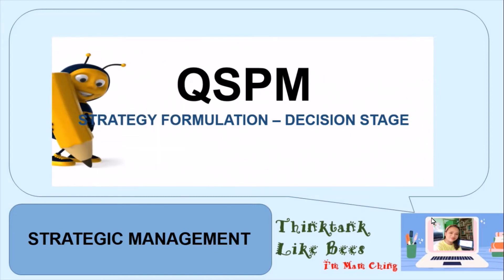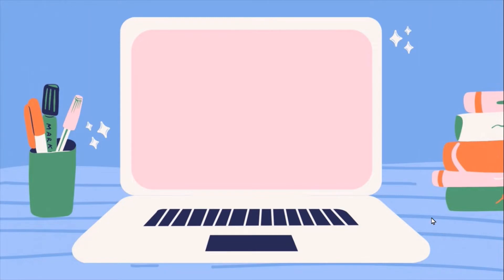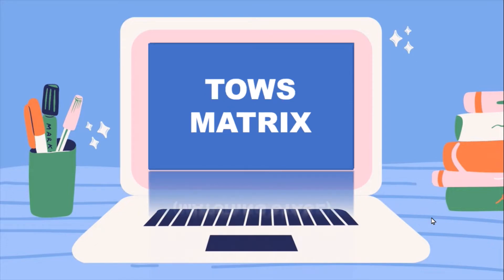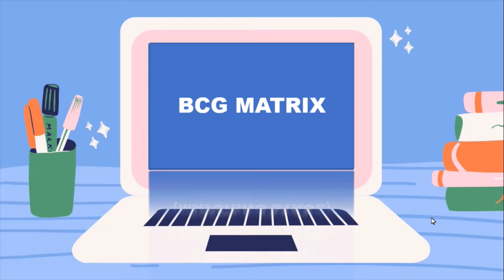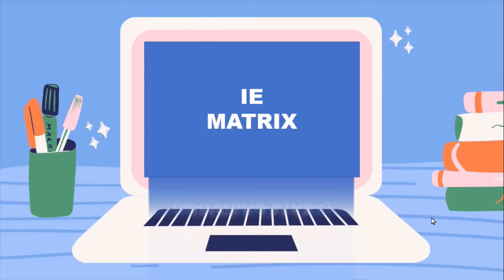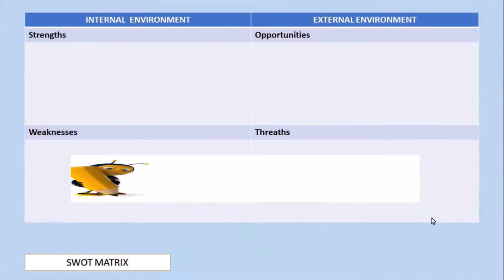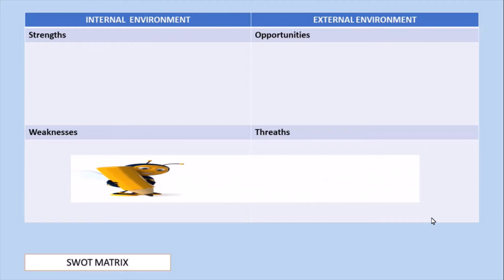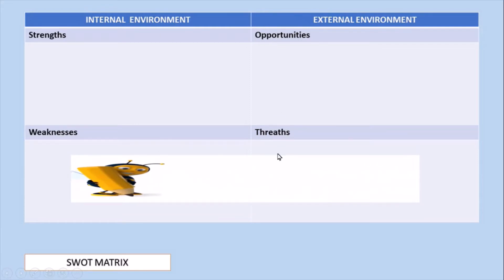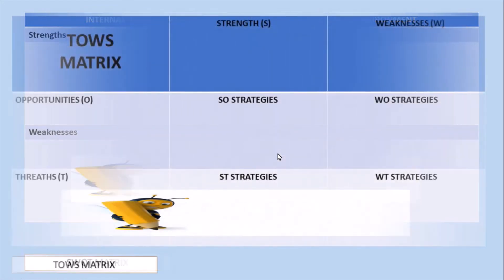Before we further discuss QSPM, let us first discuss the factors to consider on completing strategic formulation. We will tackle the matching stage tools, starting with the SWOT matrix. The SWOT matrix is used to deliberate the strengths of the organization. You discuss the internal environment under strengths and weaknesses, and list down the external environment under opportunities and threats.